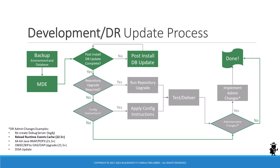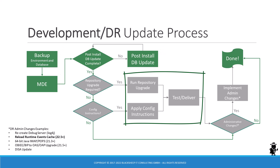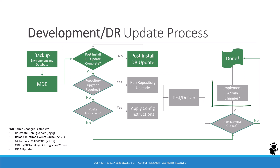Here we can see the update process for development environments, where the fast-track to a successful update is as follows: take a backup, run the MDE, run the post-install database update. If you have no repository upgrades, configuration instructions, or administrative changes to implement, you're done. If you need to execute the non-mandatory repository upgrade or apply configuration instructions, you have to do that in the development environment and test and deliver these changes. If you have any administrative changes on your to-do list, you have to implement them as well before declaring success.